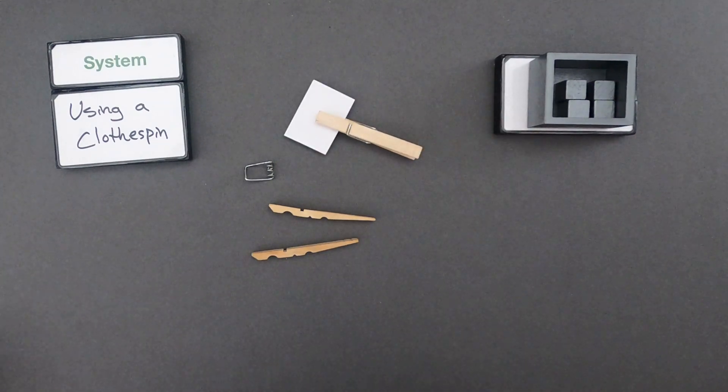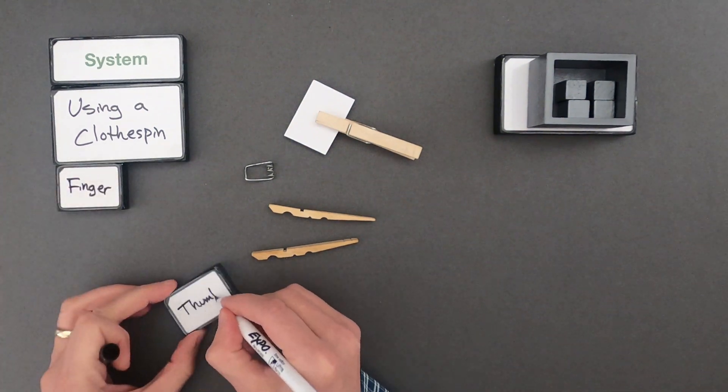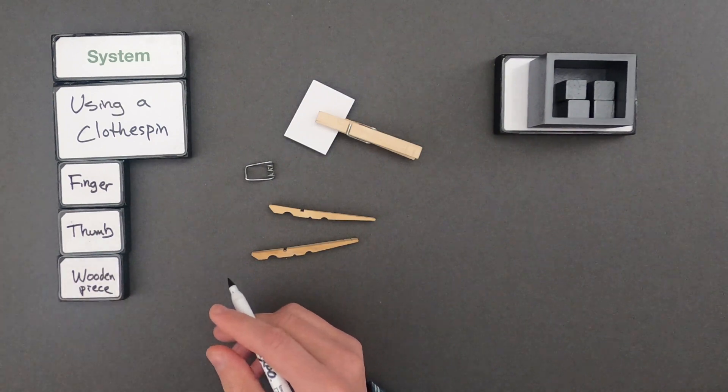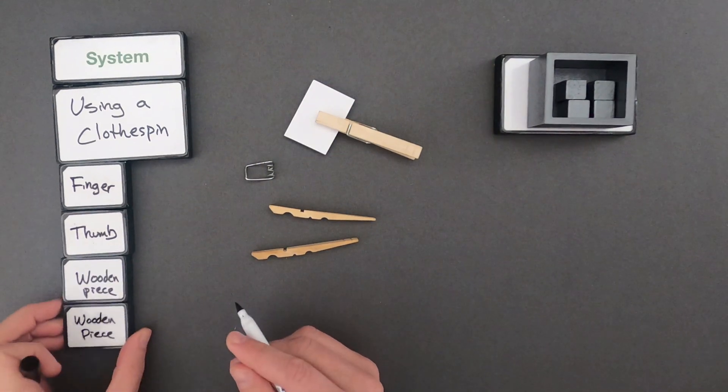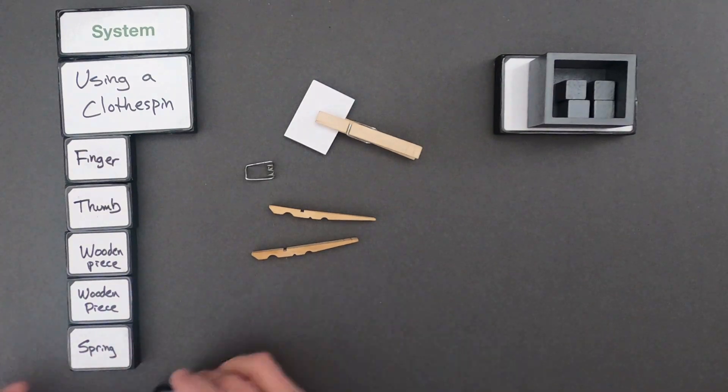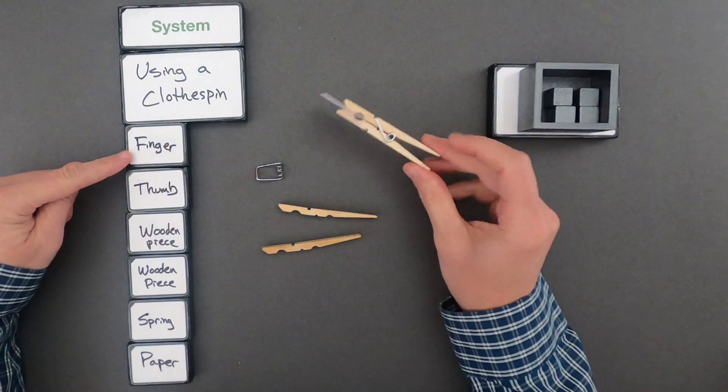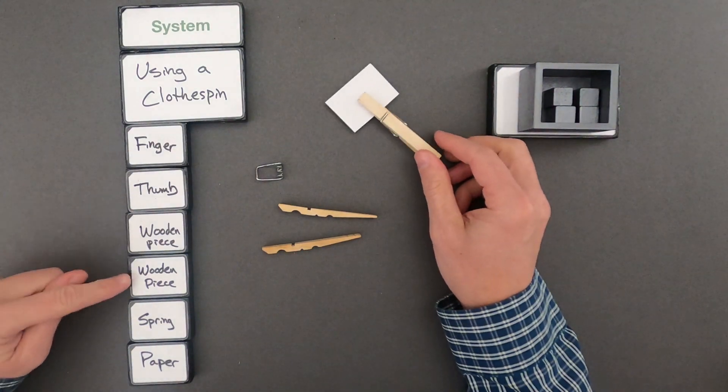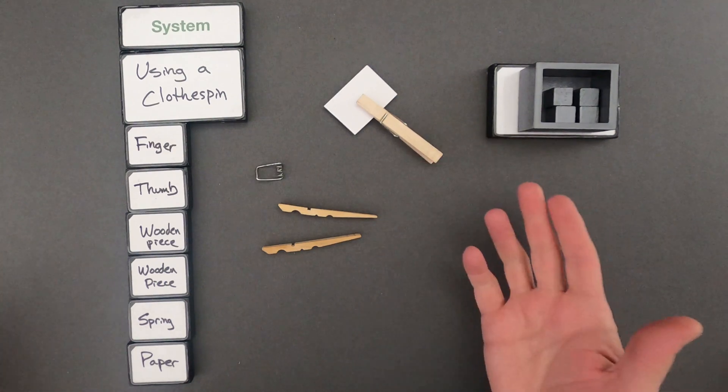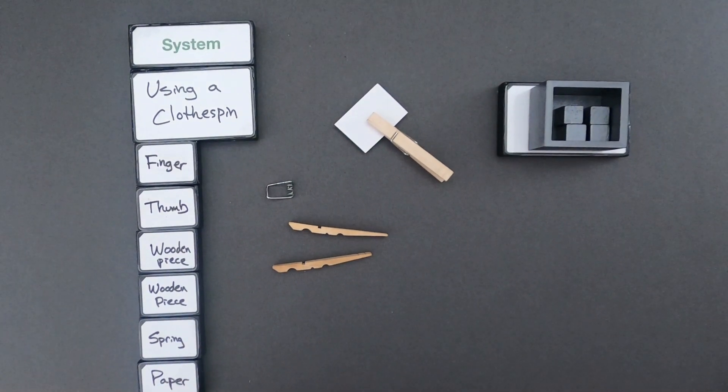Okay, the first thing I would do is I would define all the parts of the system. The parts of the system that I defined are my finger, my thumb, two wooden pieces, a spring, and a piece of paper. And so what I'm going to do now is put together the interactions between all the components of the system.